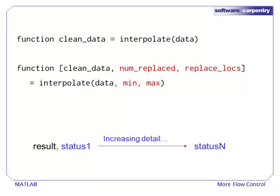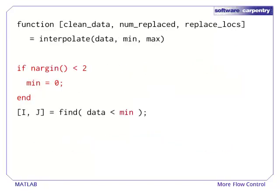Note that we are following the pattern of less to more information in our extra return variables. At the start of our function, we test whether a second parameter was passed. If not, then the min is set to the default value of zero.